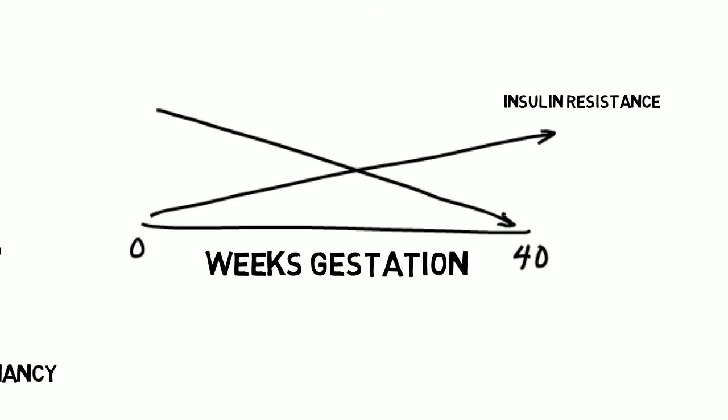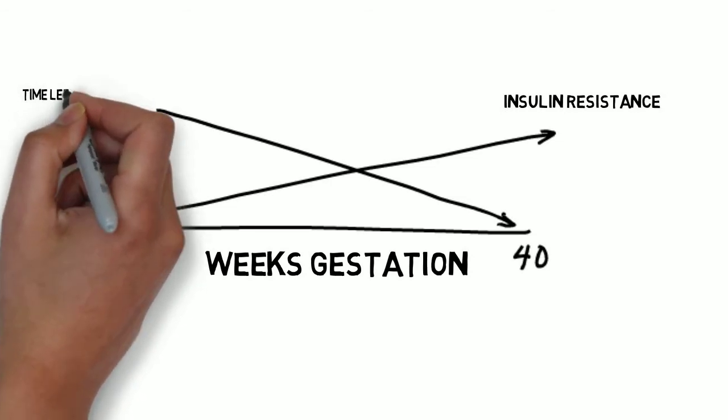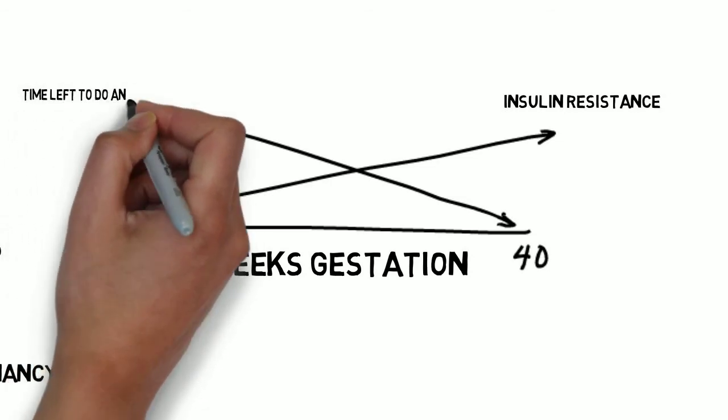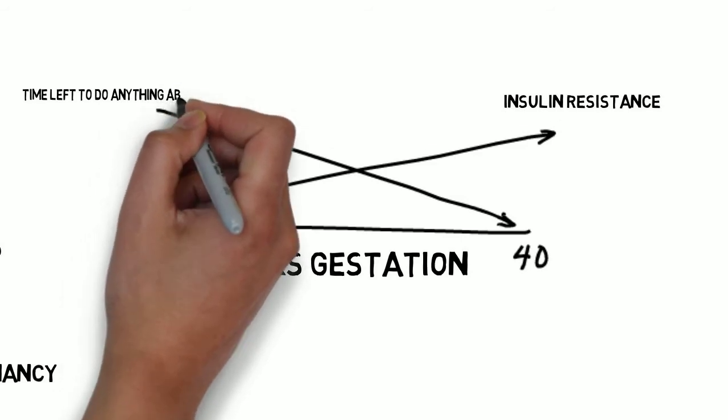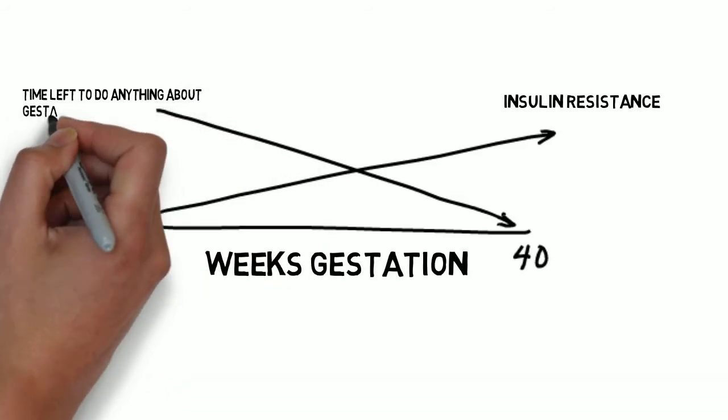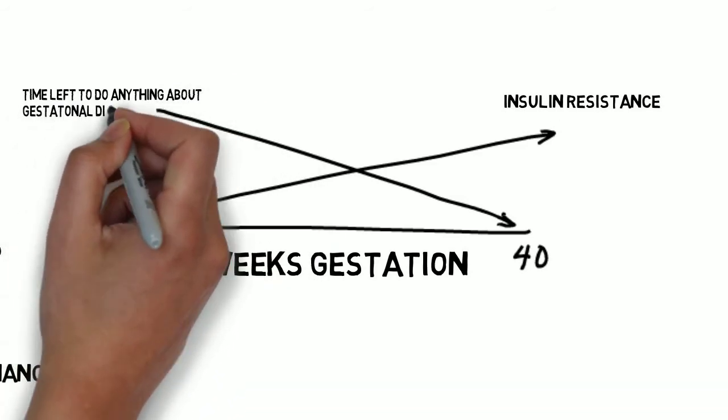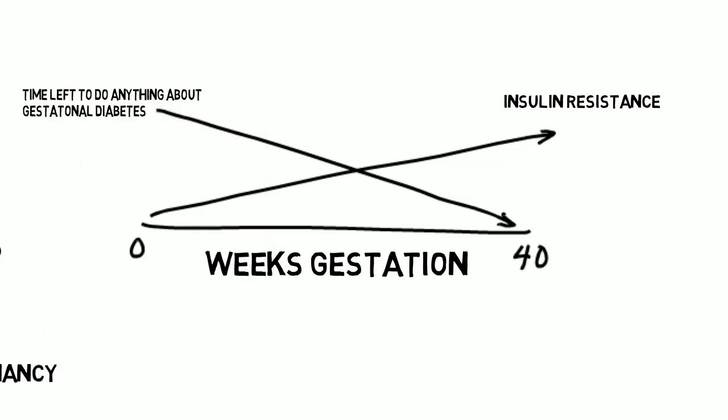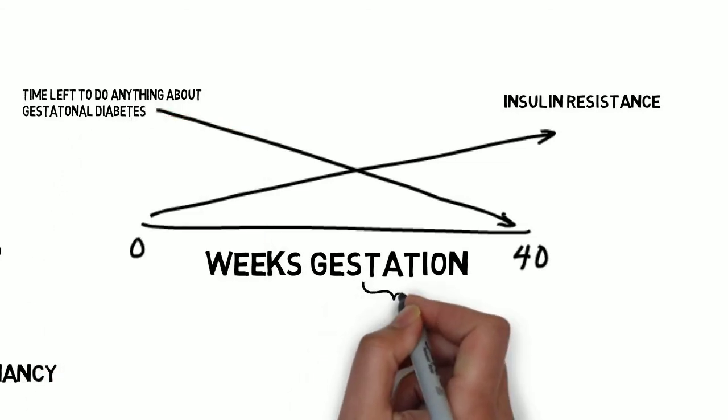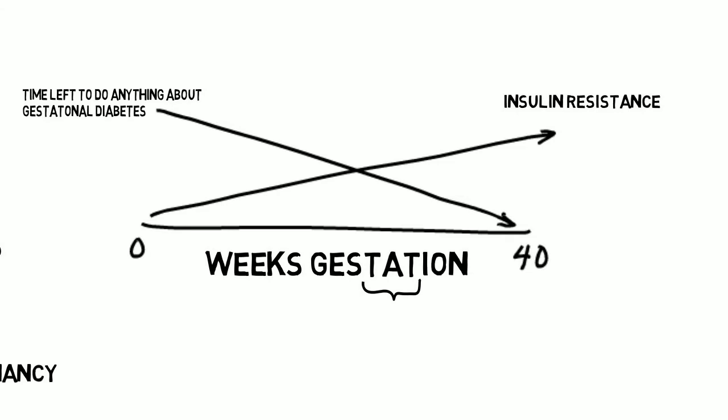If you're trying to catch every case of gestational diabetes, you would screen right before delivery. But then it's too late to treat and do anything useful. On the other hand, if you screened everyone at the first visit, you would miss a lot of patients who would ultimately get gestational diabetes. So 24 to 28 weeks is the time you catch the most and still have time to treat and make a difference.